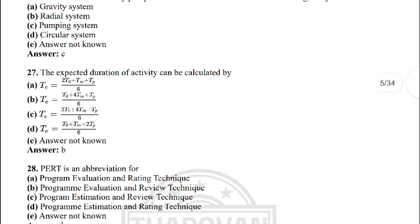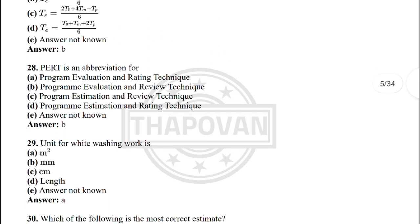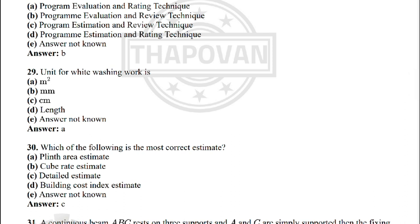Next: the expected duration of an activity can be calculated by — option B: te = (to + 4tm + tp) / 6. Next: PERT is abbreviated for — option B: Program Evaluation Review Technique. Next: unit of whitewashing work is — option A: metre square.